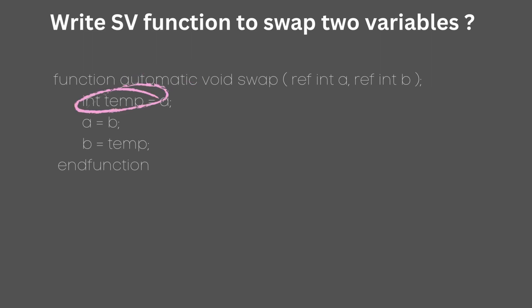Here we have declared a temporary variable to store the original value of a to be used a little later. Next we simply assign b to a, and temporary to b. This completes the swapping.